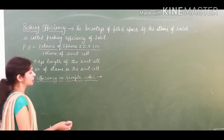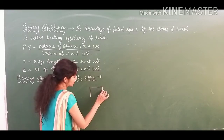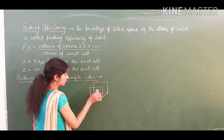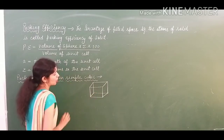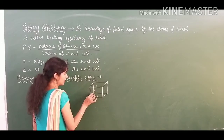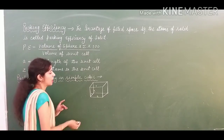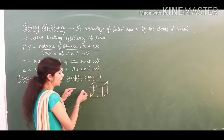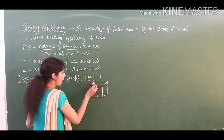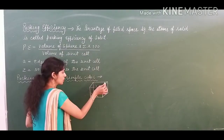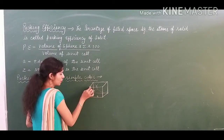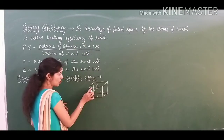First, let me draw a figure for you to understand. This is the cube — these are the edges, labelled A for length, breadth, and height, all equal. In simple cubic, one edge length is formed by the contribution of two half-spheres. So one edge length A goes from one sphere center contribution to another, like this.